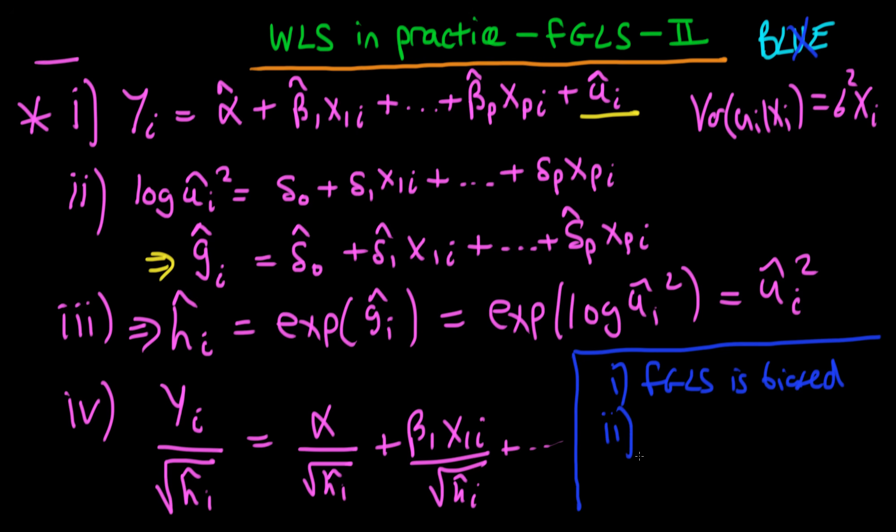But this worry goes away if we have a large sample because it turns out that feasible GLS is asymptotically unbiased. So another word for that is just saying that it is consistent. So that means if we have a big enough sample we're still going to get estimates of our parameters which are centered around their true population parameters.